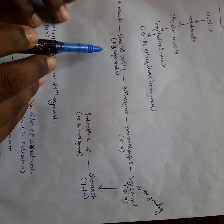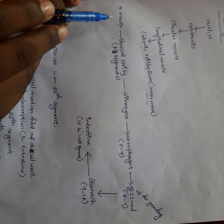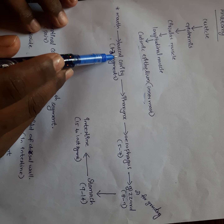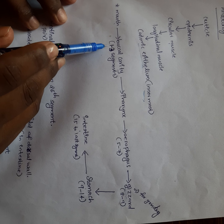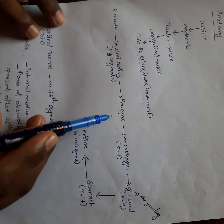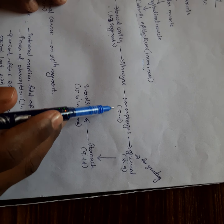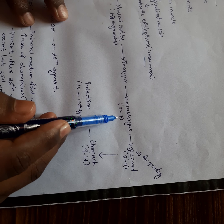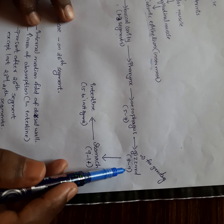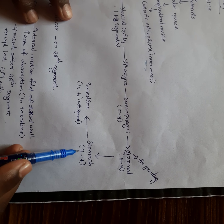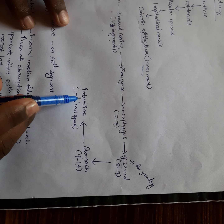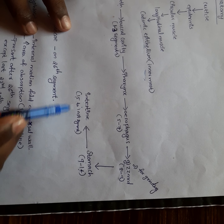Now I am taking the segment locations. The buccal cavity is present from the 1st to 3rd segment — this is very important. The esophagus is present from the 5th to 7th segments. The gizzard is on the 8th to 9th segment. The stomach extends from the 9th to 14th segment, and the intestine runs from the 15th to the last segment.